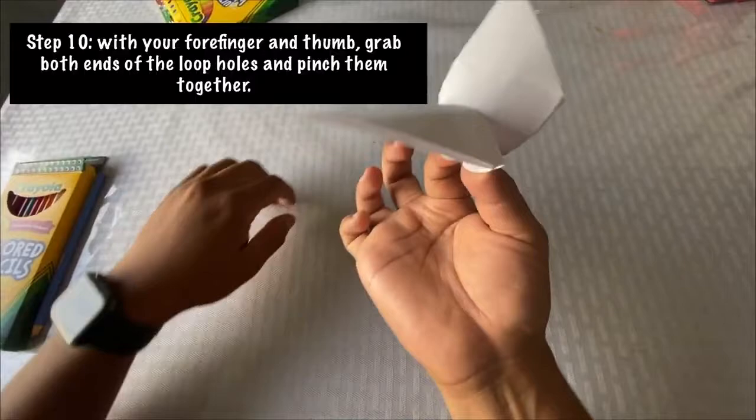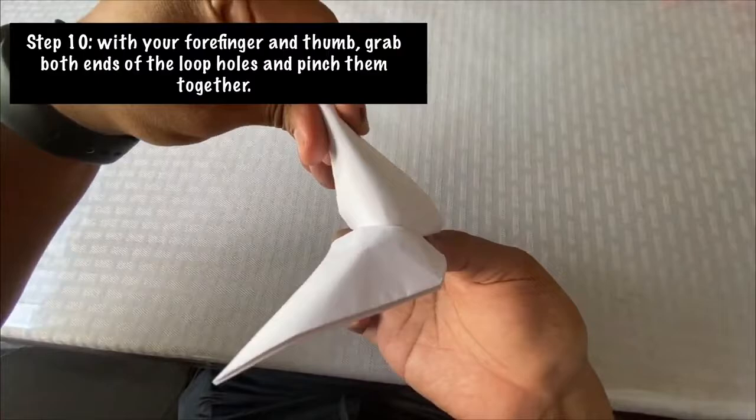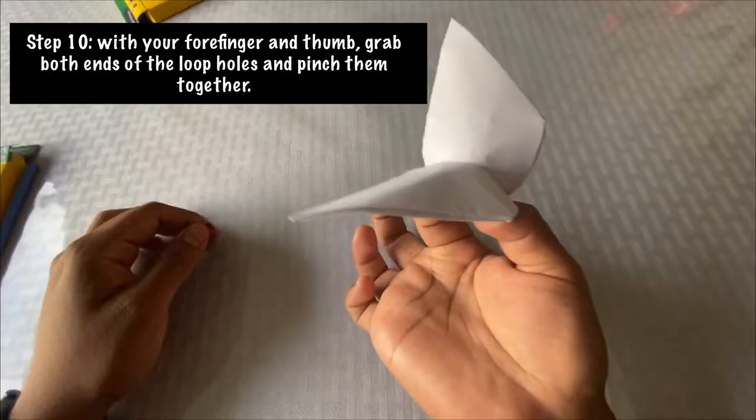All right, sweet! Now we're on to our final step, Step 10. With your forefinger and thumb, grab both ends of the loopholes and pinch them together. Adjust the wings accordingly. If they're not flapping the way you want it to, make it your own.